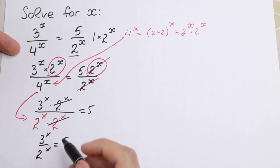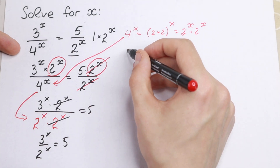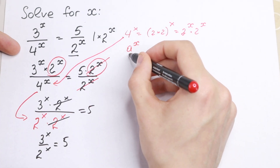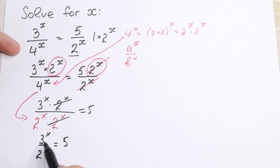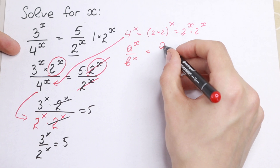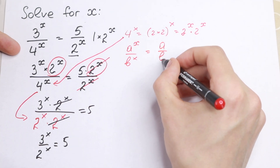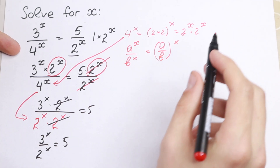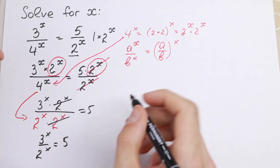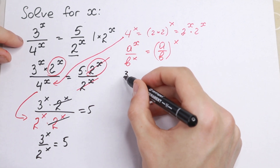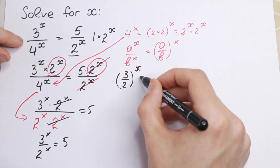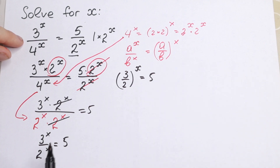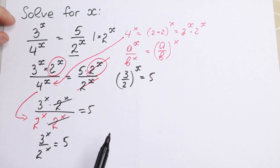So let's go to this equation. We need to know a really good rule: if we have a to the power x divided by b to the power x — the same powers but different bases — we can write it as (a over b) all raised to the power x. So we can easily write this one as (3 over 2) all raised to the power x, equal to 5.